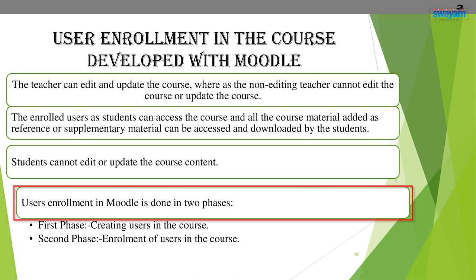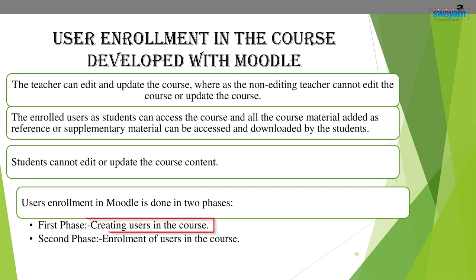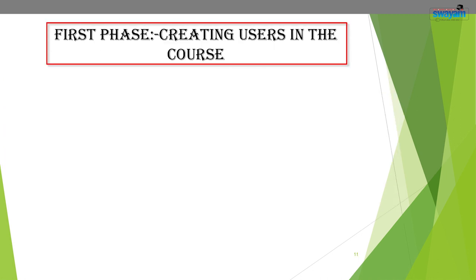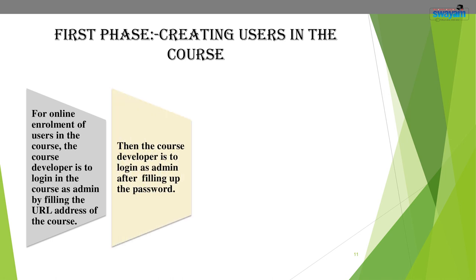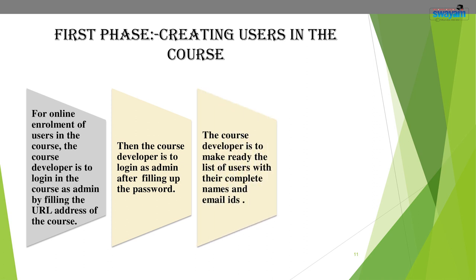User enrollment in Moodle is done in two phases. The first phase is creating users in the course; the second phase is enrollment of users in different capacities. For the first phase — creating users — the admin logs in to the course by filling in the URL address, then enters the password. The course developer prepares a list of users with their complete names and email IDs.